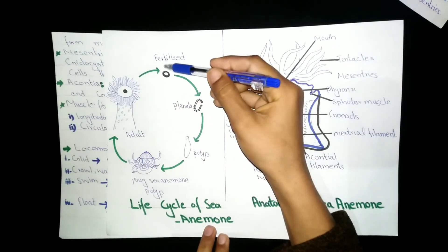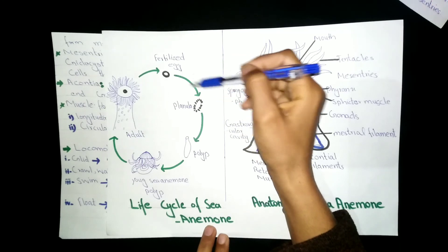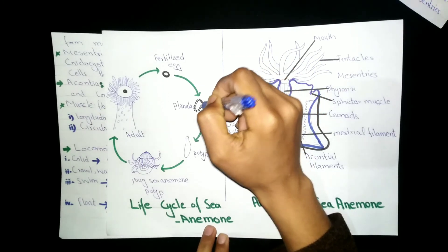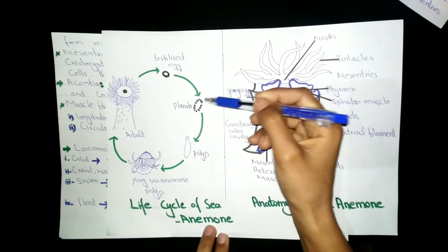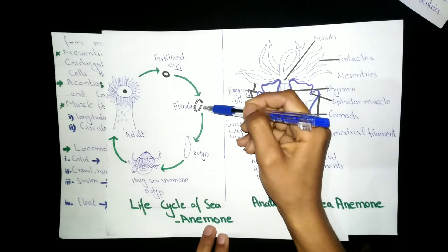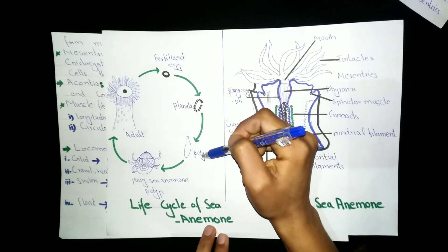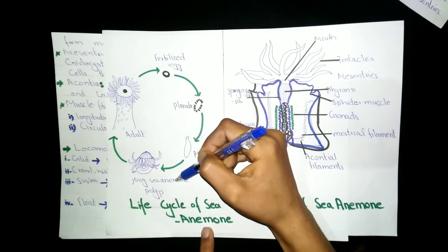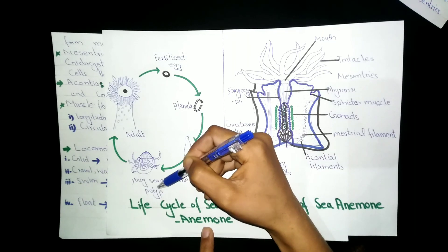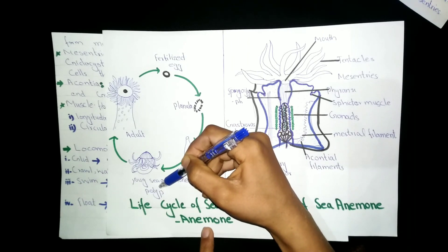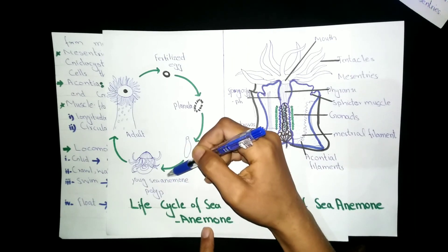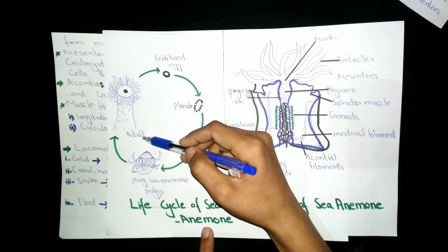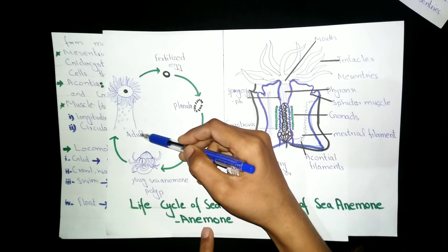After fertilization, a planula larva develops from the zygote. The larva eventually settles and develops into a young sea anemone, which is formed from the adult sea anemone.